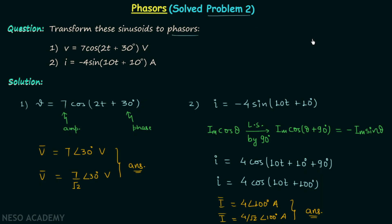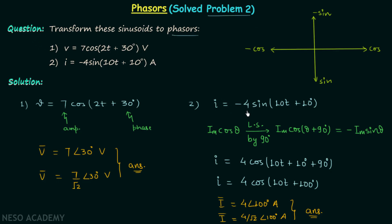Before winding up this lecture, I want to give you one shortcut to convert a signal from one form to another without going through these full conversions. The first step is to draw x and y axes, where the x-axis is for cosine and the y-axis is for sine. We focus on the signal to convert — here i equals negative 4sin(10t + 10°). Negative sine places us on that axis, and plus 10 degrees is measured in the anti-clockwise direction.